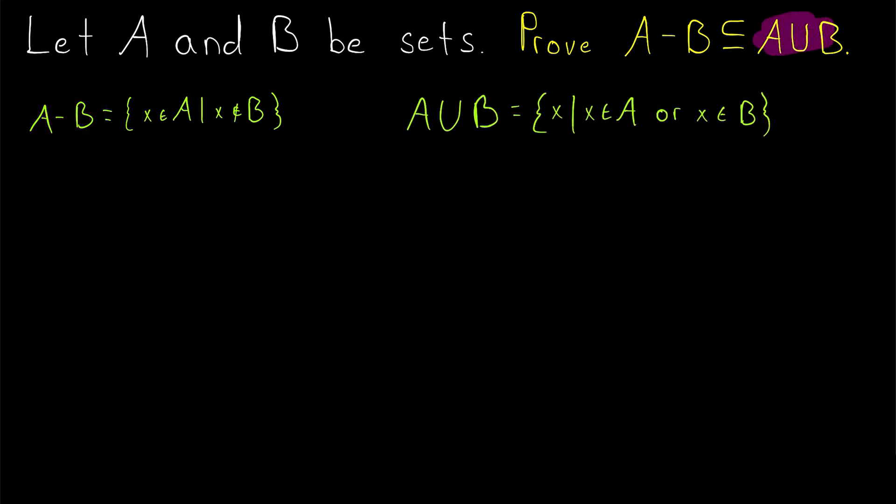And then what's the definition of A union B? Well, you should definitely know this one. A union B just contains all elements that are in A or in B. And remember, this OR means that the element can just be in A, or it can just be in B, or it can be in A and in B. So A union B just takes both of these sets and puts them together.